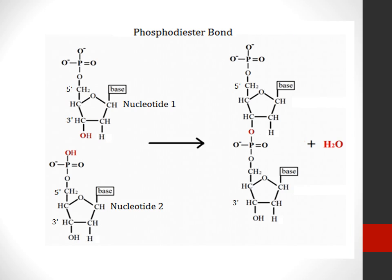We will now understand the formation of a phosphodiester bond between two nucleotides. See the alignment of the first nucleotide — this is the 5' position with the phosphate group and this is the 3' position with the hydroxyl group. The second nucleotide is aligned similarly. The hydroxyl group at the 3' position of nucleotide one reacts with the OH group of the phosphate at the 5' position of nucleotide two. As a result, a molecule of water is eliminated and a phosphodiester bond is formed between the 3' position of nucleotide one and the 5' position of nucleotide two.